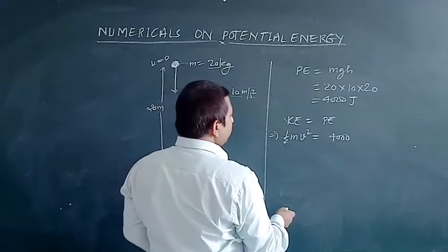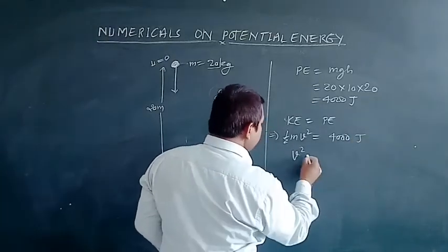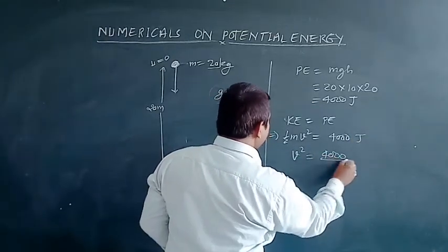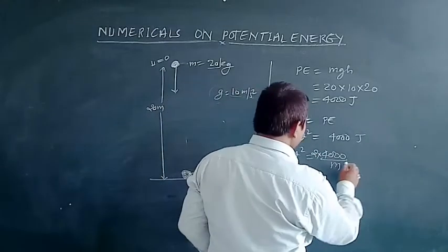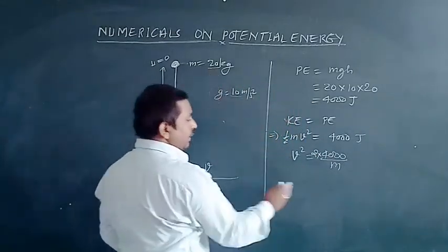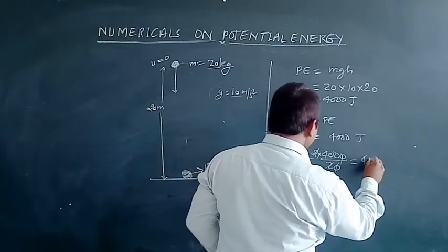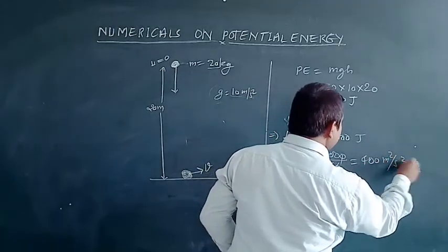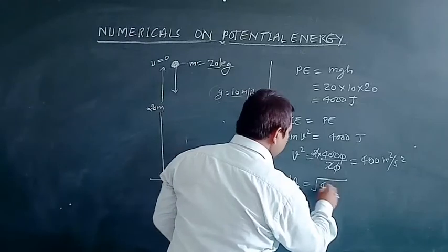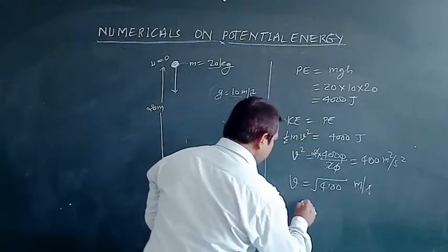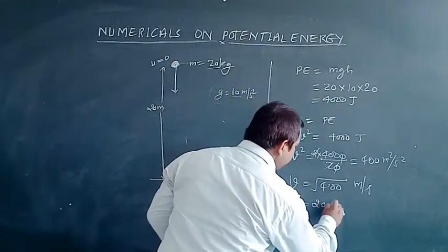From here we can write: ½mv² = 4000 joules. So V² = (4000 × 2) ÷ m = (4000 × 2) ÷ 20 = 400 m²/s². Taking the square root, the velocity with which the object strikes the surface of the ground is 20 meters per second.